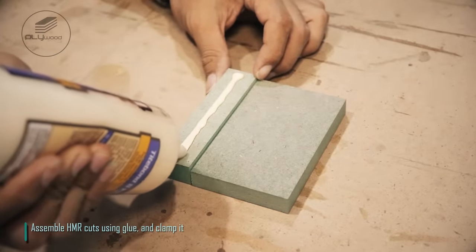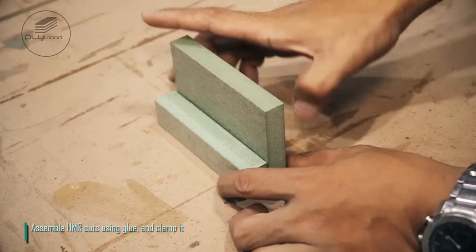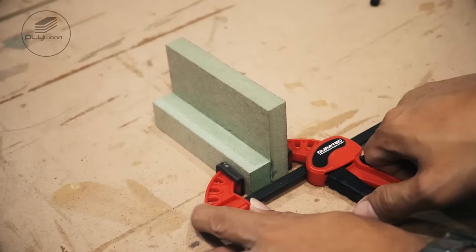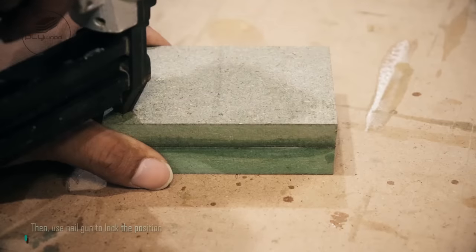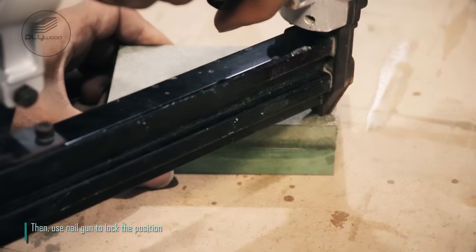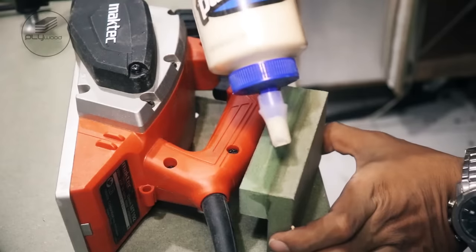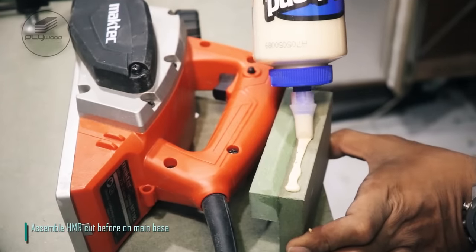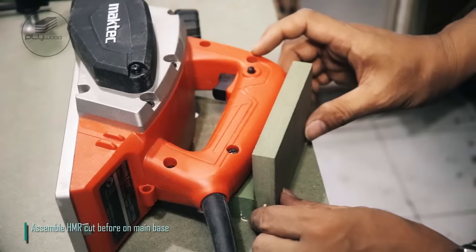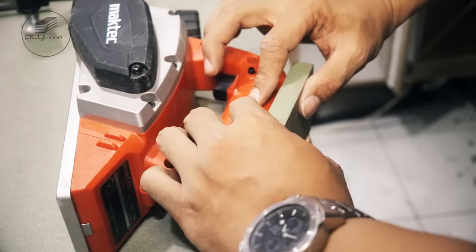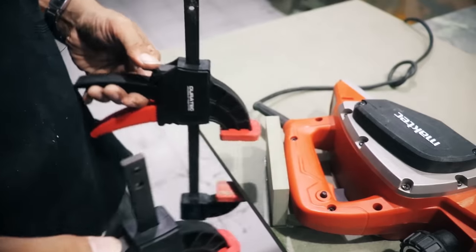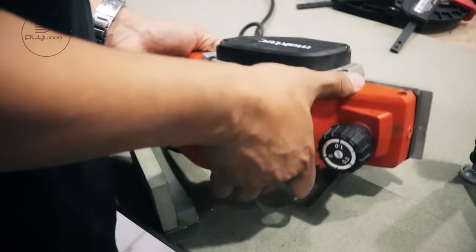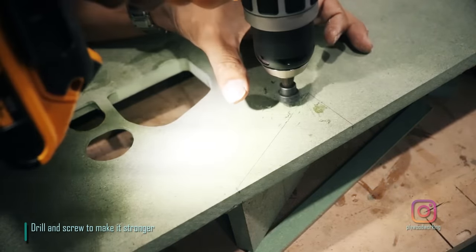Assemble HMR cuts using glue and clamp it. Then use nail gun to lock the position. Assemble HMR cut before on main base. Drill and screw to make it stronger.